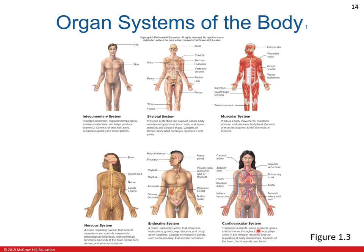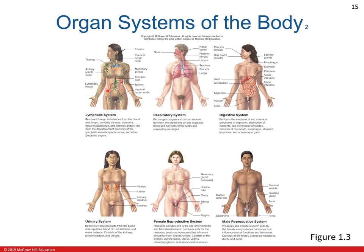Sixth would be the cardiovascular system, which transports nutrients, waste products, gases, and hormones throughout the body. It consists of the heart, blood vessels, and blood. Another would be your lymphatic system. This removes foreign substances from the blood and lymph, combats diseases, maintains tissue fluid balance, and absorbs dietary fats. It consists of lymphatic vessels — usually found in the axillary, groin, and neck — as your lymph nodes, and other lymphatic organs. Next is your respiratory system, which exchanges oxygen and carbon dioxide between the blood and air and regulates blood pH. It consists of your lungs and respiratory passages.